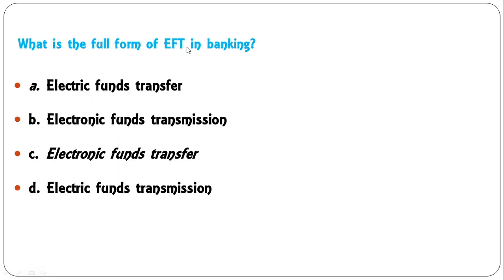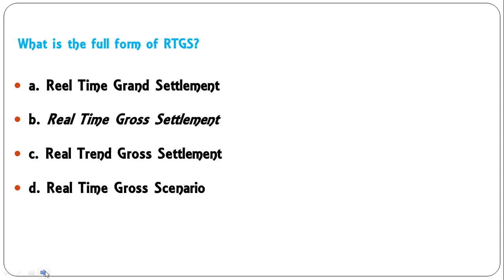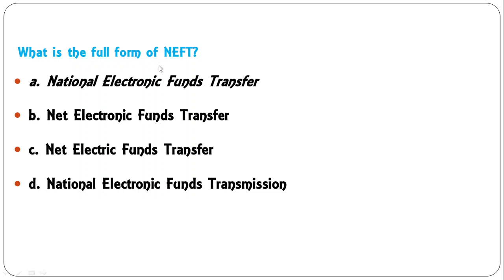What is the full form of EFT in banking? The options are: electric funds transfer, electronic funds transmission, electronic funds transfer, or electric funds transmission. The correct answer is electronic funds transfer — C is correct. What is the full form of RTGS? The options are: real time grant settlement, real time gross settlement, real trend growth settlement, real time gross scenario. The correct full form of RTGS is real time gross settlement — B is correct.